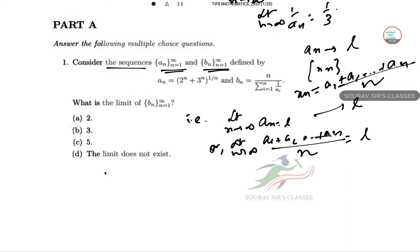So now limit as n tends to infinity of a_1/n is this, this power n. Similarly, limit as n tends to infinity of (1/a_1 + 1/a_2 + ... + 1/a_n)/n is also this, one third.